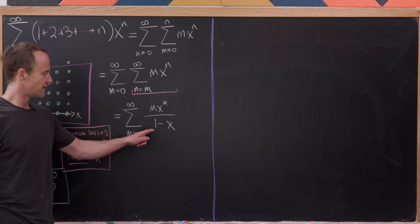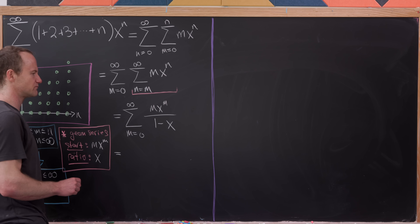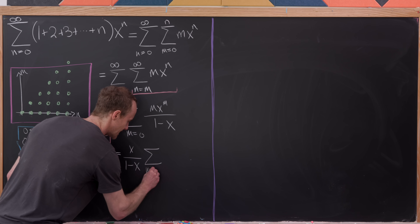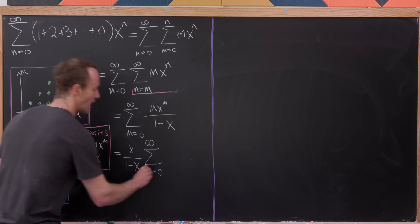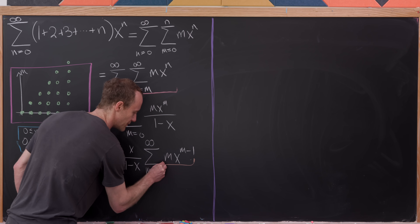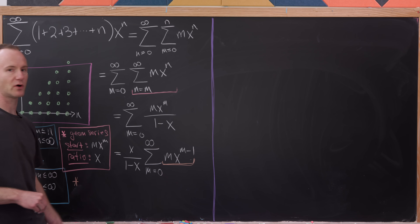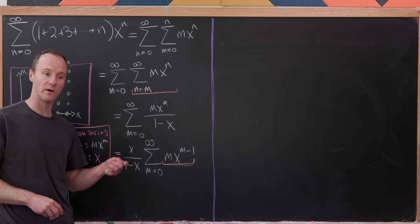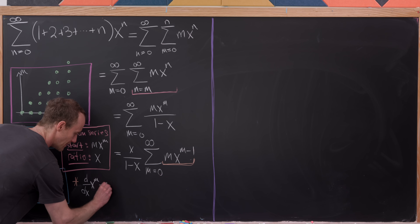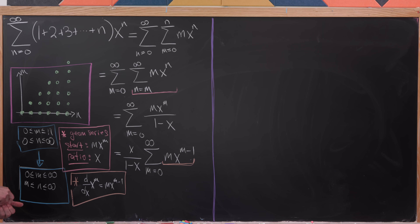Now let's factor x over (1 minus x) out of the sum, leaving us with x over (1 minus x) times the sum as m goes from zero to infinity of m times x to the m minus one. Notice that this inner sum looks like a derivative has occurred — that's exactly why I pulled the x out, so the exponent would be one less than the coefficient. The derivative of x to the m is m times x to the m minus one.